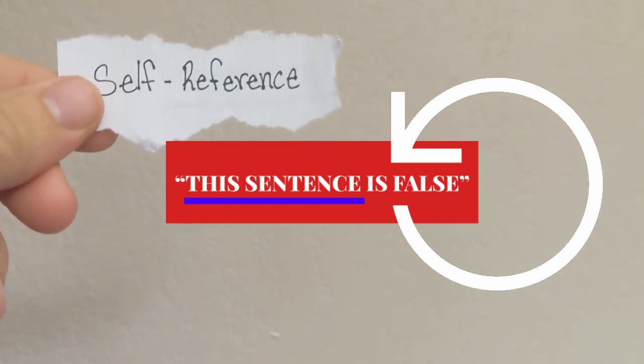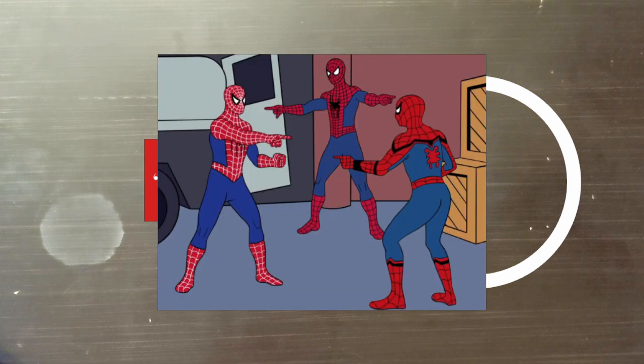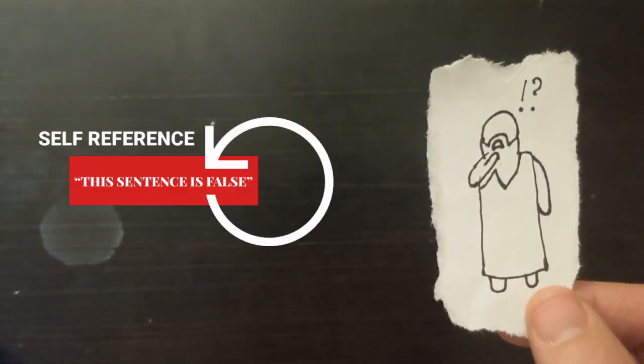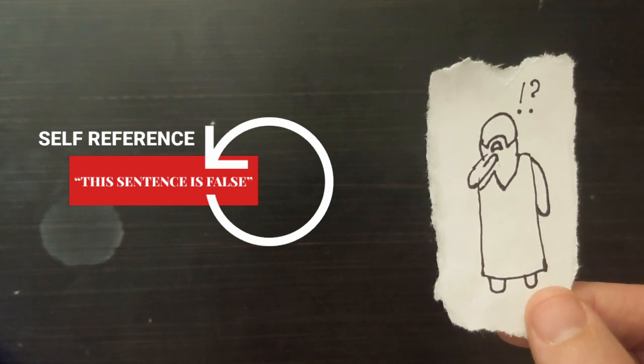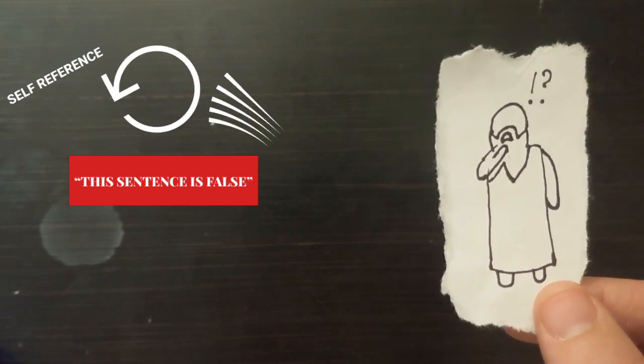This is what's known as self-reference. A word or phrase inside of the sentence that is referring to the sentence itself. A lot of philosophers have theorized that the problem in this paradox comes from this problem of self-reference, and that if we were to get rid of self-reference, we would be able to solve the paradox.